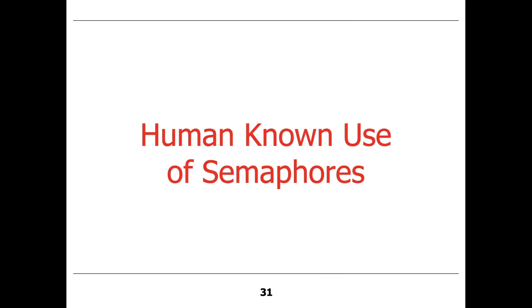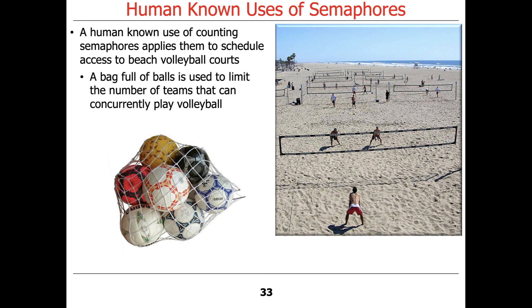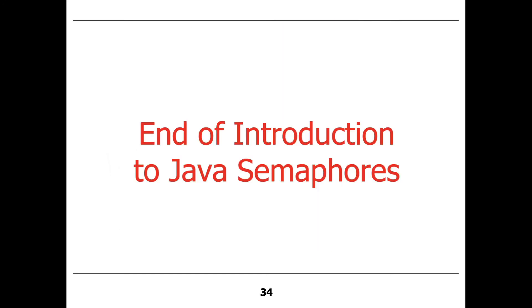A good human-known use of semaphores is scheduling access to beach volleyball courts. If you go to Corona Del Mar State Park, you can see an example of this — a bag full of balls is used to limit the number of teams that can concurrently play volleyball. That's the end of the introduction to Java semaphores.